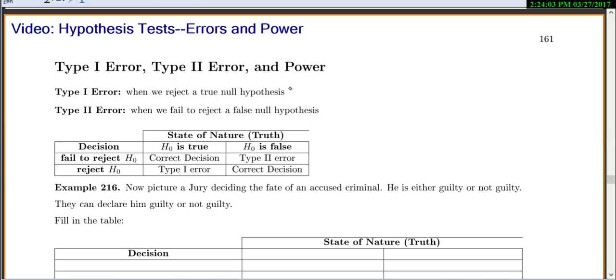A type 1 error is when we reject a true null hypothesis, and a type 2 error is when we fail to reject a false null hypothesis.